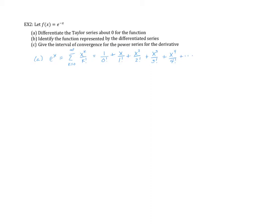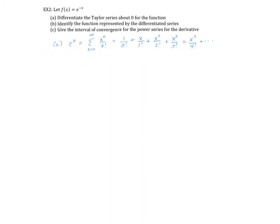So e^(-x) is similar to e^x — all we have to do is substitute negative x in place of x. To differentiate the Taylor series about 0, we first find the Taylor series by comparing to the table. Replacing x with negative x, expanded out we get 1/0! + (-x)/1! + (-x)²/2! and so on. This is actually going to turn into an alternating series.